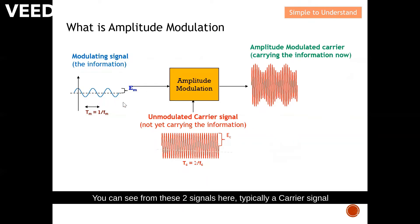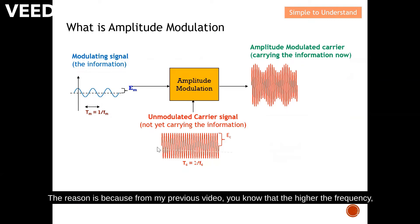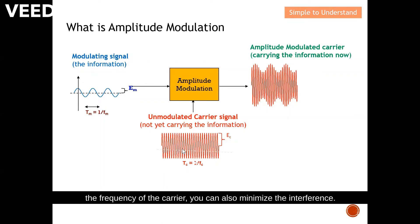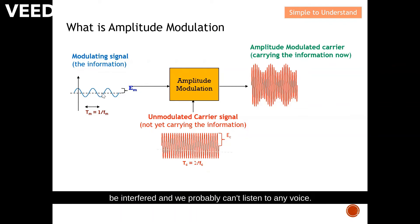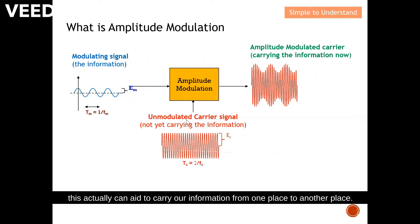From these two signals, you can see that typically a carrier signal has a frequency much, much higher compared to the modulating signal. The reason is, as mentioned in my previous video, the higher the frequency, the size of the antenna can be greatly reduced. Also, by properly controlling the frequency of the carrier, you can minimize interference. Most of the time, if we send our voice — which typically has almost the same frequency — directly over the air, all our voices will interfere with each other. However, with the carrier and by properly controlling its frequency, we can carry our information from one place to another.